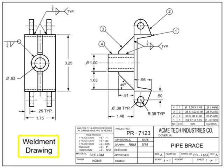Weldment drawings are a unique form of detail drawings. Weldments occur when multiple pieces are welded together to form a final item. Weldments are not assemblies, due to the fact that their component parts are not stocked or sold separately, have no use as stand-alone items, and are not detailed on separate drawings. Weldment drawings can also be called inseparable assembly drawings. Welding symbols that indicate the length, type, and other information about the weld are shown in the field of the drawing to indicate the location of the welds.